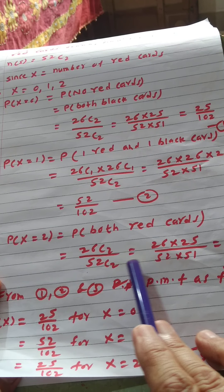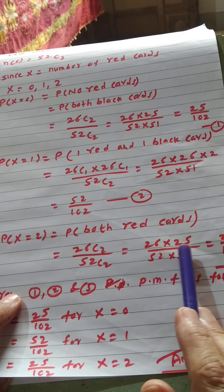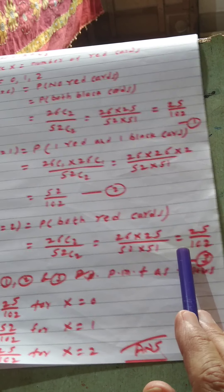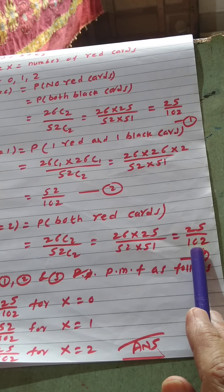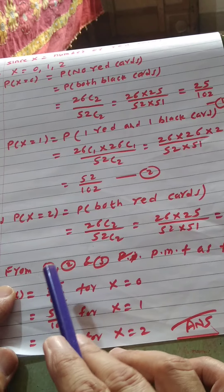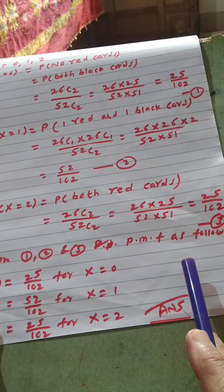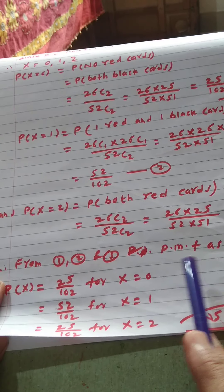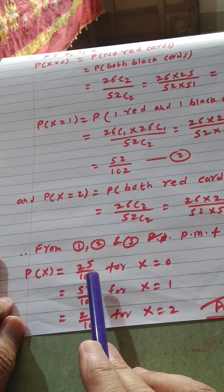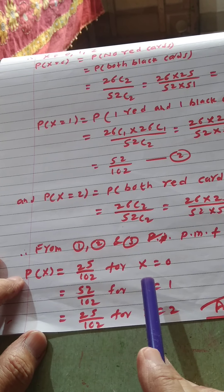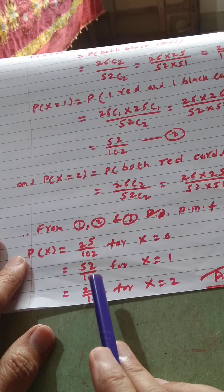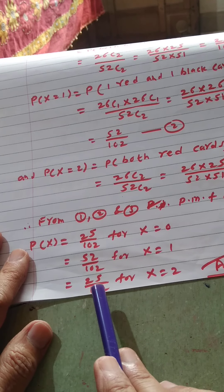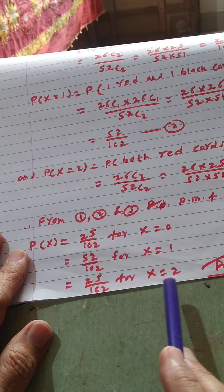Now P(X=1) equals the probability of one red card and one black card. Therefore, one red card from 26 red cards — 26C1 — times one black card from 26 black cards — 26C1 — divided by 52C2. That equals 26×26 divided by 52×51. The 2 factorial goes to the numerator, giving 52 by 102.